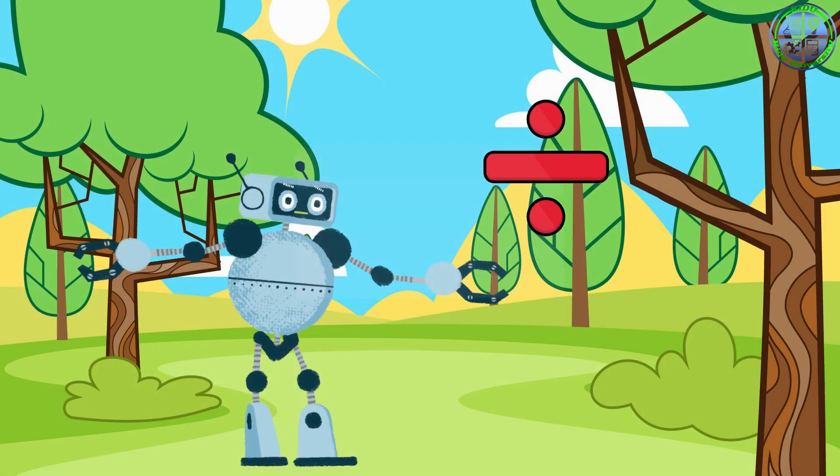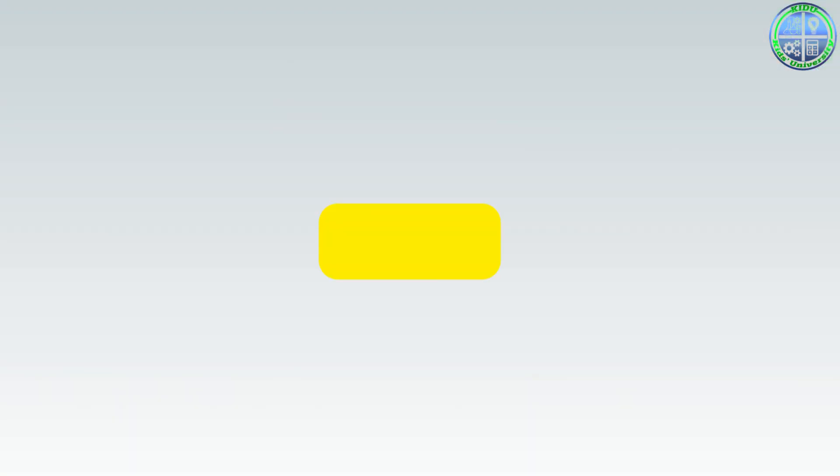And then there's division, which is like sharing equally. If those 20 chairs need to be shared by five tables, each table gets four chairs.